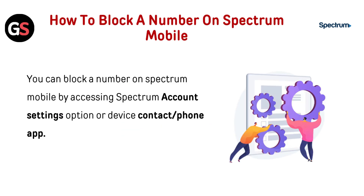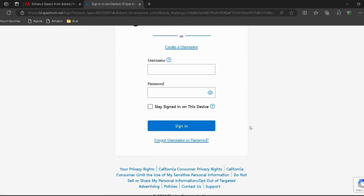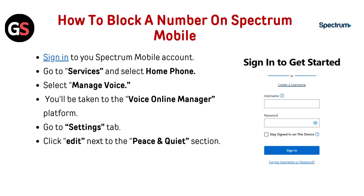You can block a number on Spectrum Mobile by accessing Spectrum account settings or your device's contact or phone app. Sign in to your Spectrum Mobile account — the link is given below in the description. Go to Services and select Home Phone, then select Manage Voice. You will be taken to the Voice Online Manager platform. Go to the Settings tab.